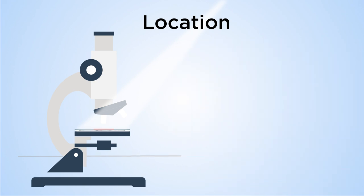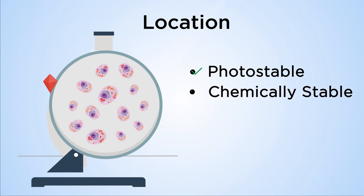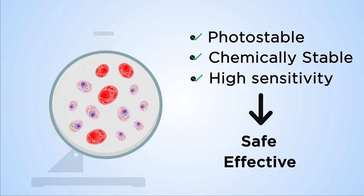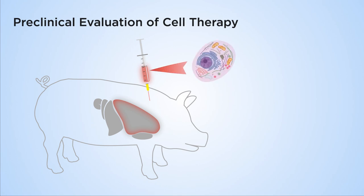Fluorescent nanodiamonds are both photostable and chemically stable and can be detected with high sensitivity without being harmful to living tissue. Transplanted cell tracking using fluorescent nanodiamonds is the first method to be successfully applied to large animal models.